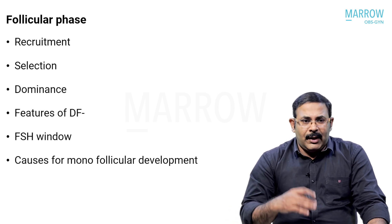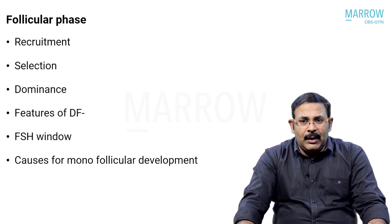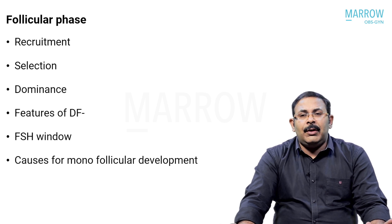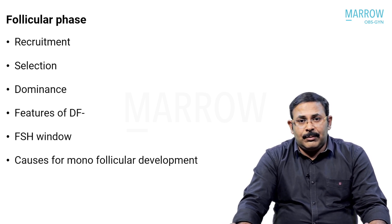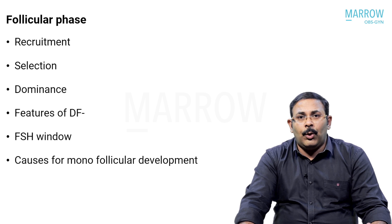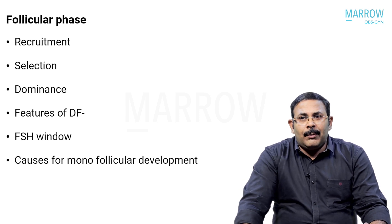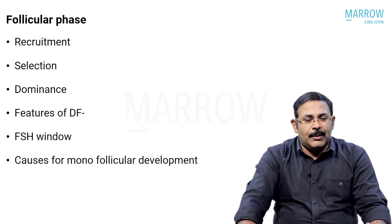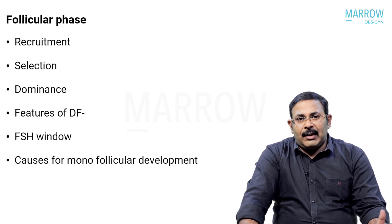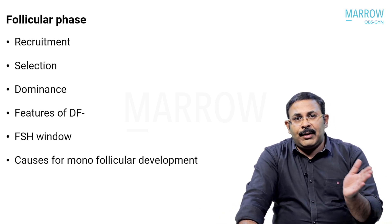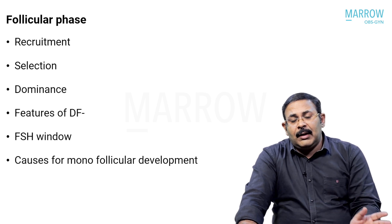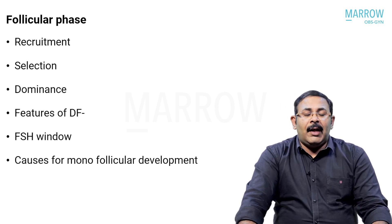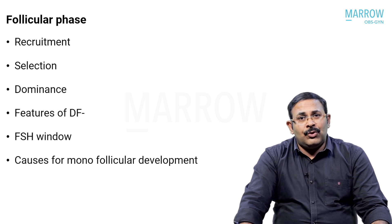Atresia continues through various stages of development, and in the reproductive lifetime you will have only around 400 follicles which are going to be ovulated - all the remaining primordial follicles are wasted by various mechanisms. It starts at around seven to eight million, by birth it becomes around one to two million, slowly becoming less and less, and by menopause it is around one thousand remaining.